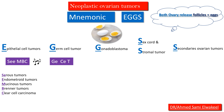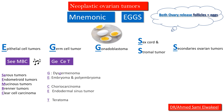The mnemonic for germ cell tumors takes the first two letters from 'germ cell' and T from 'tumor,' giving us GECET. G for germinoma (dysgerminoma), E for embryoma and yolk sac embryoma, C for choriocarcinoma, E for endodermal sinus tumor, and T for teratoma.